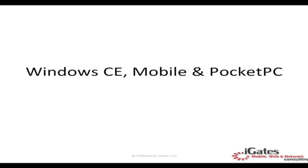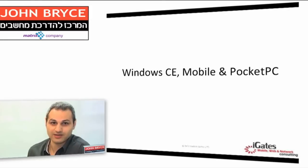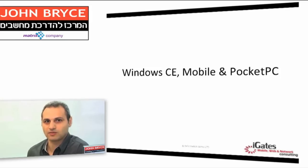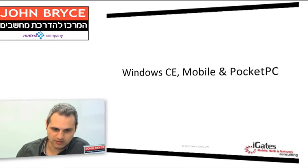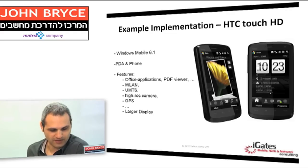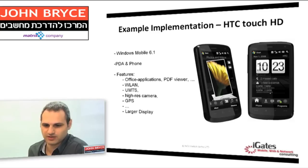Now we will talk about Windows CE, Windows Mobile, and Pocket PC. We can look at them as the same OS — the difference between them is the configuration. Each configuration is provided to supply the needs of different market segments, such as the mobile market, point of sales, etc. A good example of an implementation is the HTC Touch, which is an implementation of the Windows Mobile configuration on top of Windows CE.